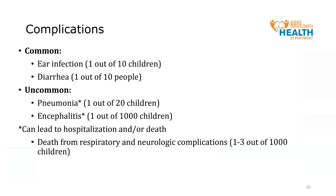Although complications do not occur in all measles cases, there are some groups that are at greater risk. One out of 10 infected children will develop an ear infection, one out of 20 will develop pneumonia, and one out of 1,000 children will develop encephalitis, which is inflammation of the brain caused by an infection. Importantly, encephalitis and pneumonia can lead to hospitalization or death, and death from these complications occurs in about 1 to 3 out of 1,000 infected children. Among adults, diarrhea can occur in approximately 10% of cases, or in 1 out of every 10 adults.